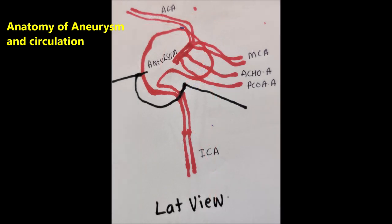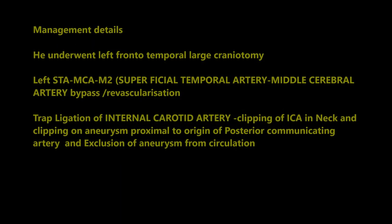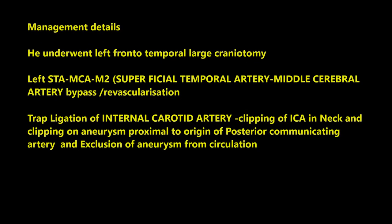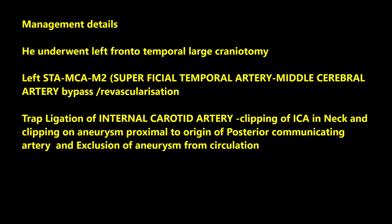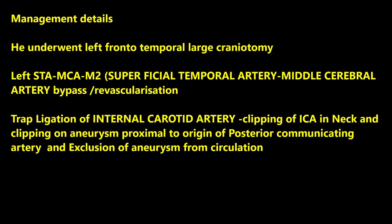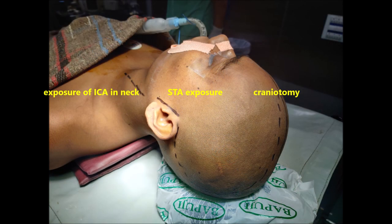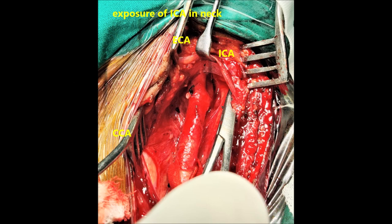These are the pictorial demonstrations of aneurysmal anatomy. He was taken up for surgery and underwent left frontotemporal large craniotomy, superficial temporal artery to middle cerebral artery M2 bypass, and trap ligation of the internal carotid artery in the neck and supraclinoid internal carotid artery intracranially, proximal to the origin of the posterior communicating artery.